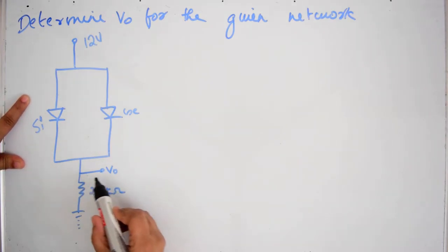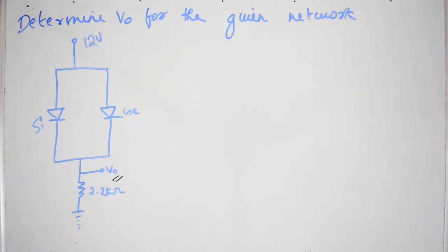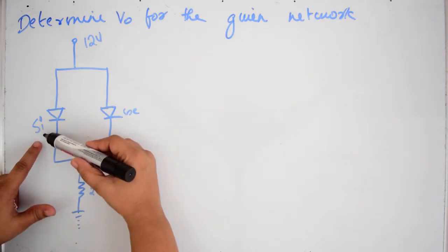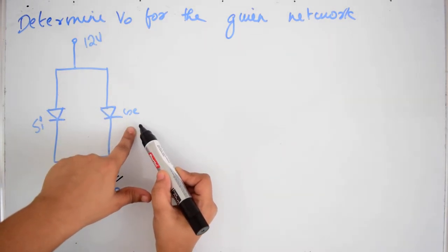We have to find the output voltage V0 of this circuit. There is a silicon diode in this path and a germanium diode in this path.